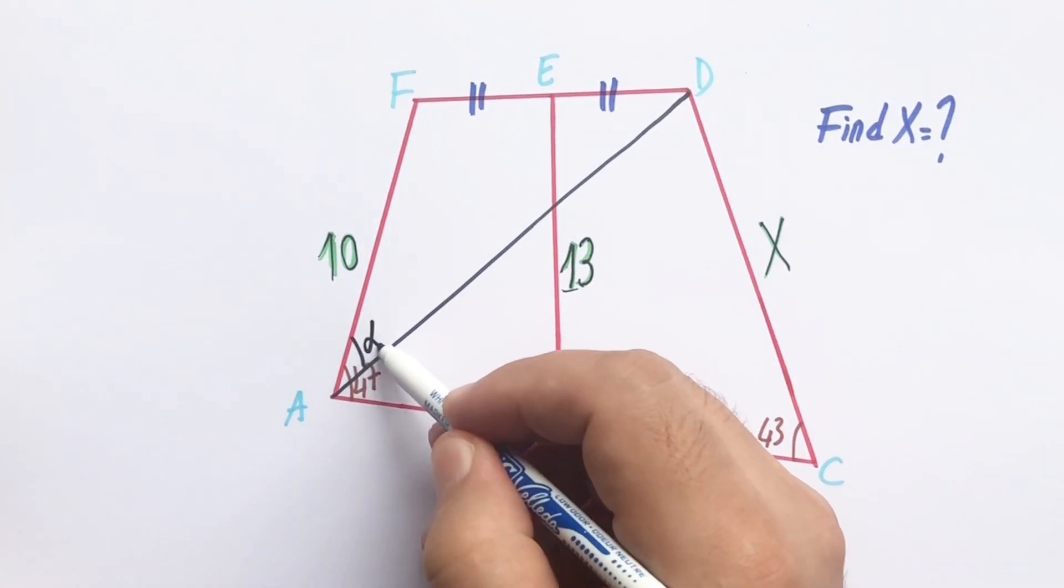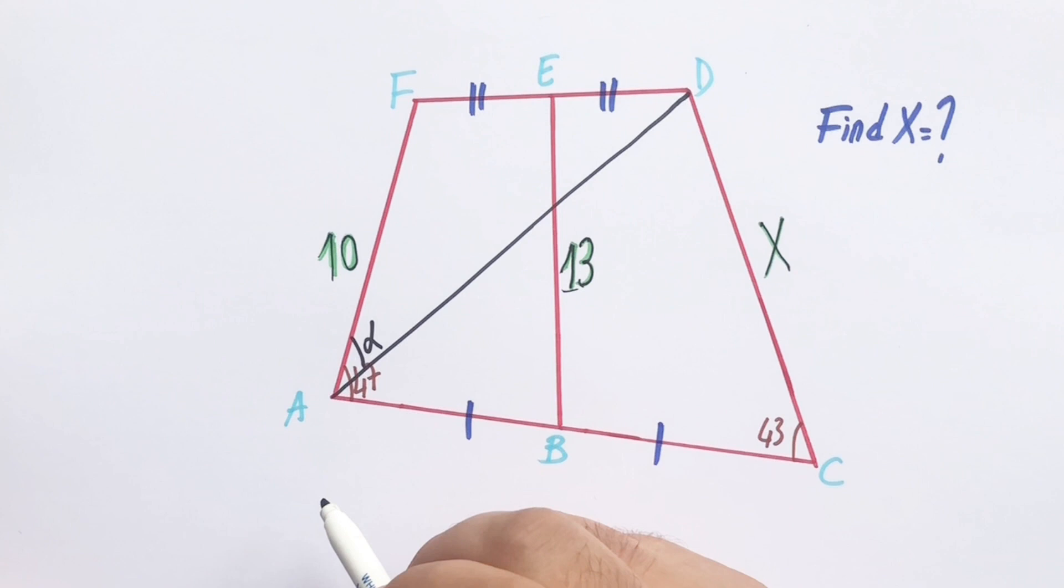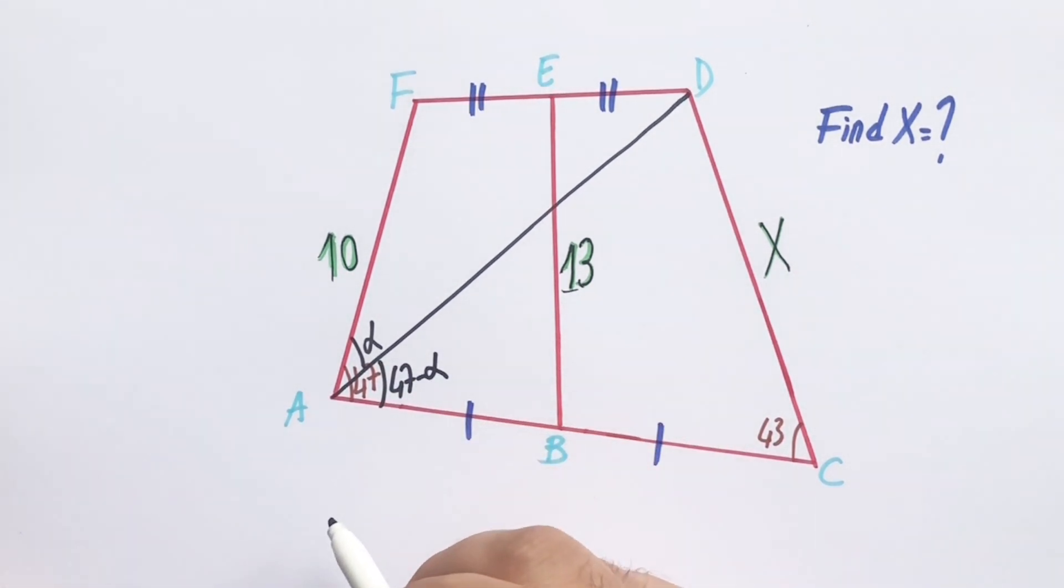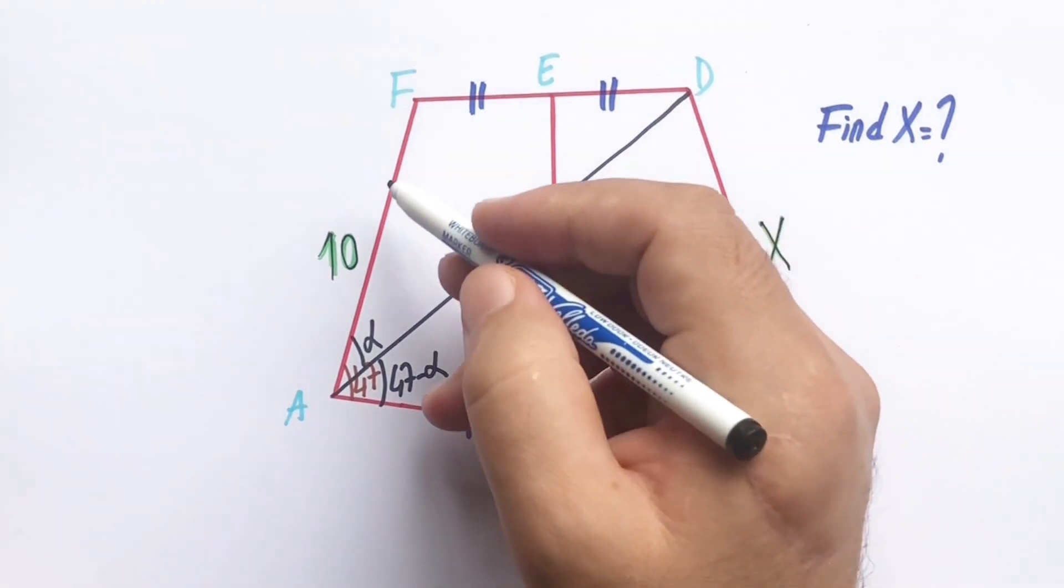Let's call here alpha. Therefore this angle must be 47 minus alpha.